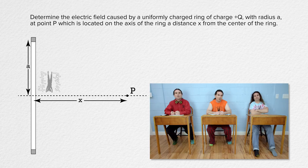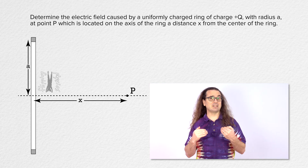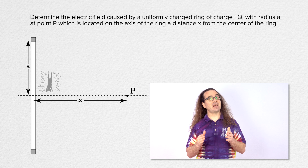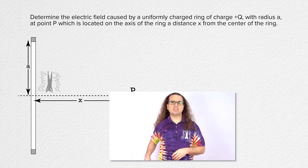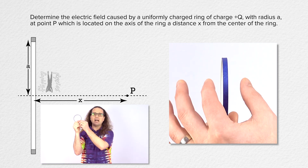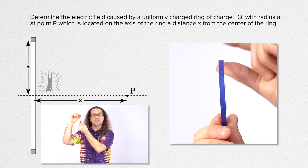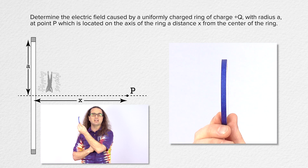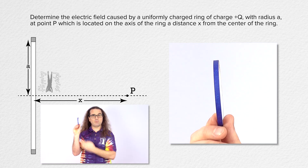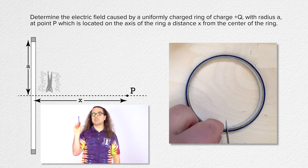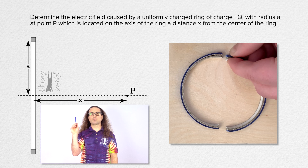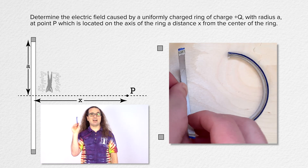Let's determine the electric field caused by a uniformly charged ring of charge positive Q with radius a at point P, which is located on the axis of the ring a distance x from the center. We have a positively charged object — like a roll of tape — where the width and thickness are very small relative to its radius. What you see in the illustration is a side view cross-section of the ring, as though we cut it vertically in the middle; the gray areas show the inside of the thin ring.